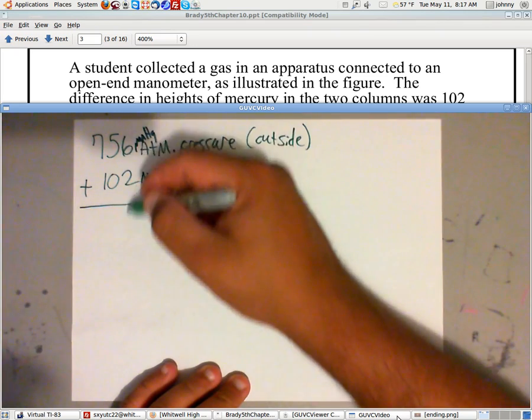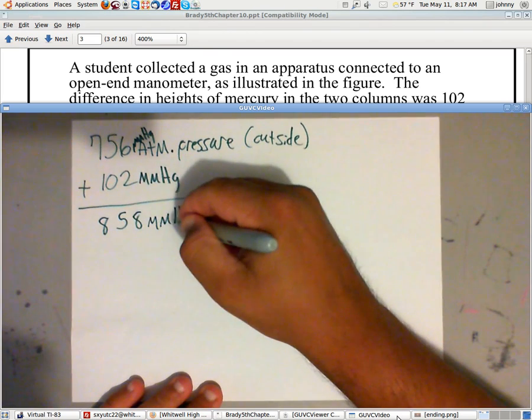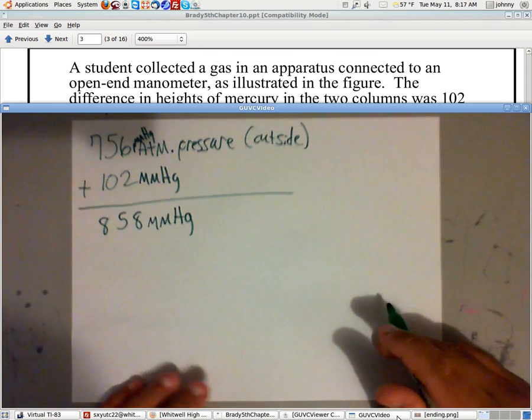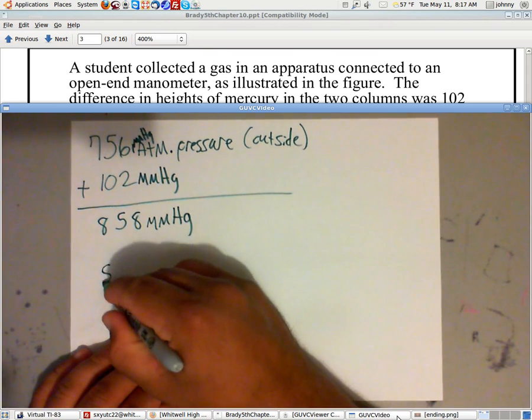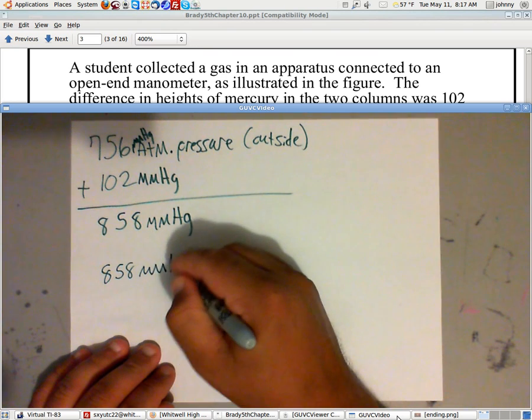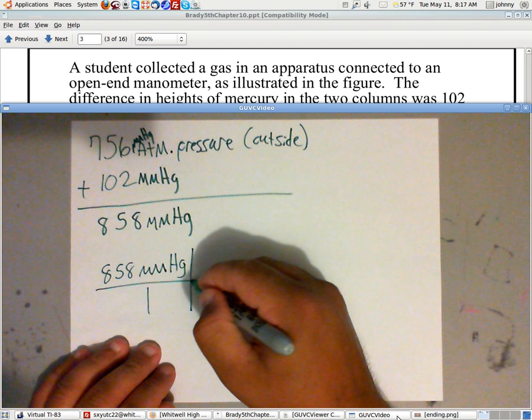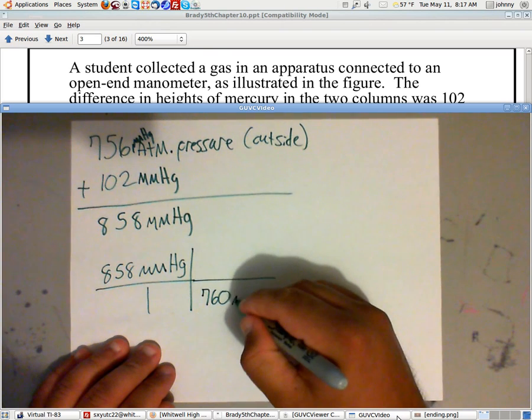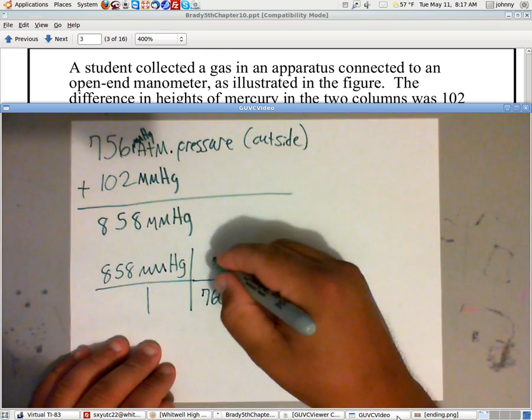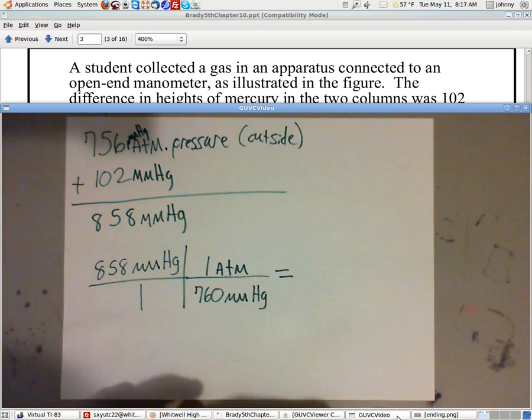Millimeters of mercury and millimeters of mercury. All we have to do is add these two. We get 858. Now, a lot of times professors will tell you that atmospheric pressure must be in ATMs. If they do this to you, you take 858 millimeters of mercury, put it over one, and then you will say that there are 760 millimeters of mercury in one ATM. That will convert it to ATMs for you.